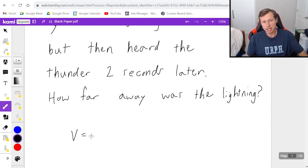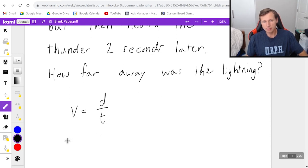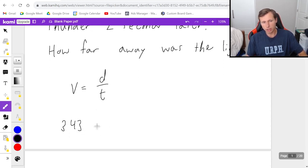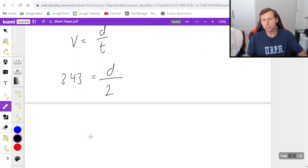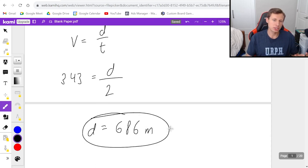All we got to do is say velocity equals distance over time. The velocity is 343. The distance is what we're solving for, and the time in this case is two seconds. So all you need to do is multiply both sides by two. It looks like 343 times two is 686.